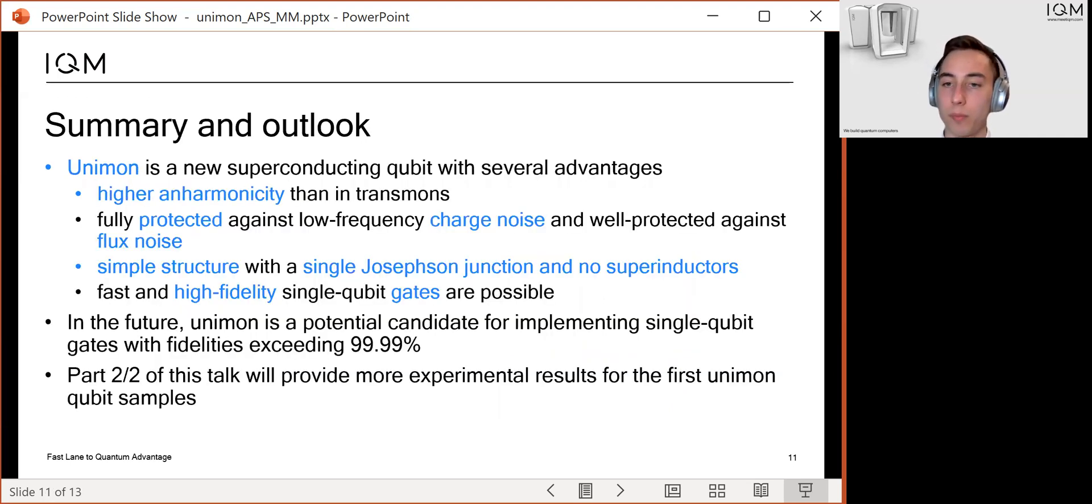As a summary, I have presented the Unimon that is a new island-free superconducting qubit that has some quite nice properties. First, the Unimon has a relatively high anharmonicity. Second, the Unimon is protected against charge and flux noise. Third, the Unimon has a simple structure in which there is only a single Josephson junction, and also no superinductors are needed.